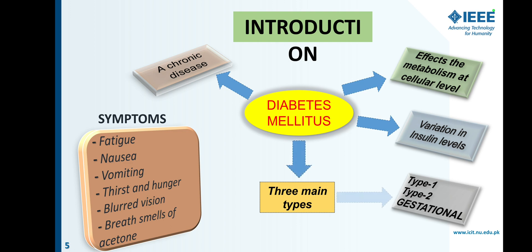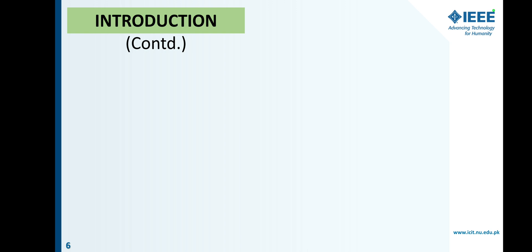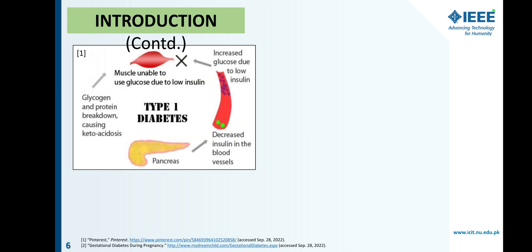Basically there are three main types of diabetes: Type 1 diabetes, Type 2 diabetes, and Gestational diabetes. There are many symptoms of diabetes, some of which are fatigue, nausea, vomiting, thirst and hunger, frequent urination, blurred vision, and breath that smells of acetone.